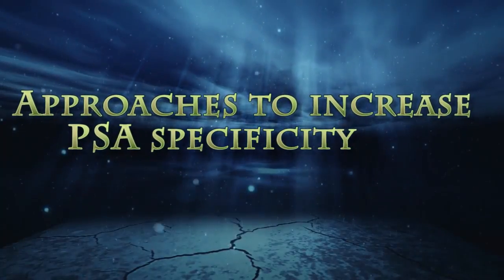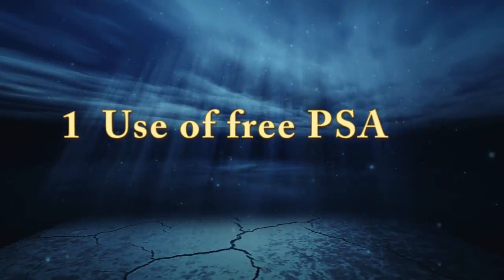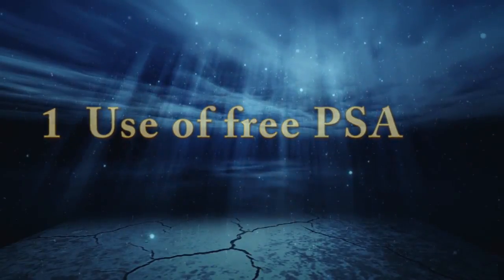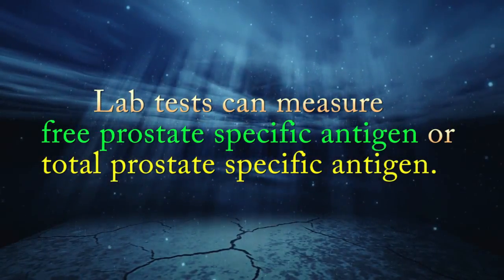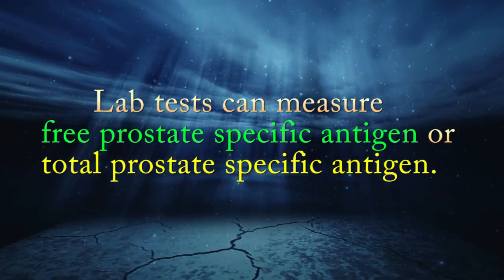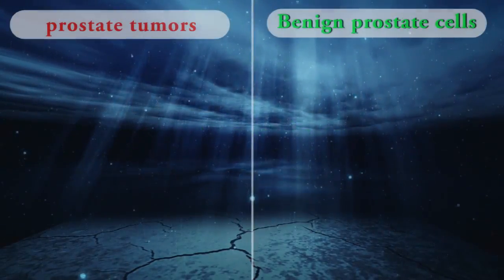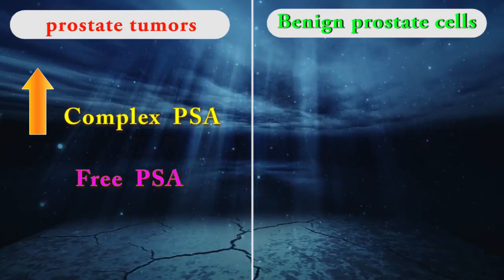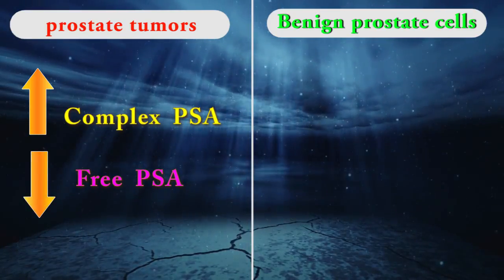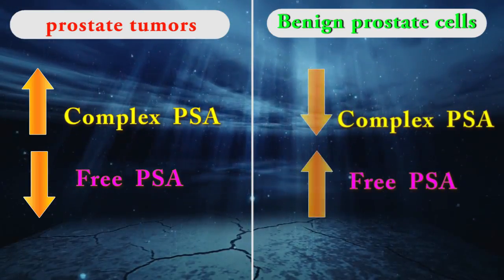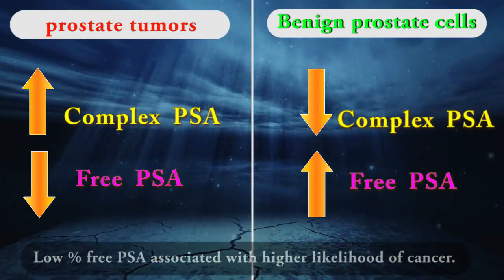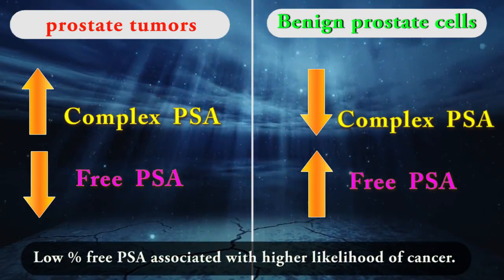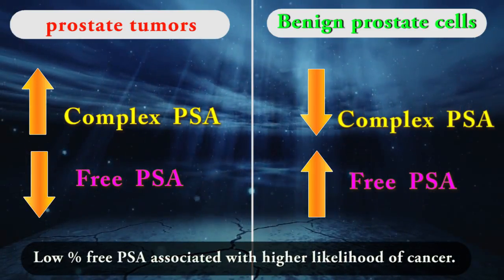One approach to increase PSA specificity is the use of free prostate-specific antigen. Lab tests can measure free PSA or total PSA. Prostate tumors typically produce mostly complexed PSA, not free PSA, while benign prostate cells tend to produce more free PSA. Therefore, a low percent free PSA is associated with a higher likelihood of cancer.